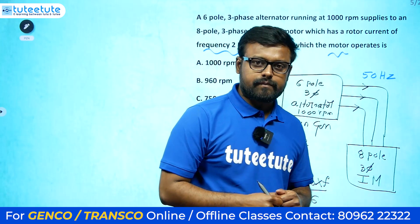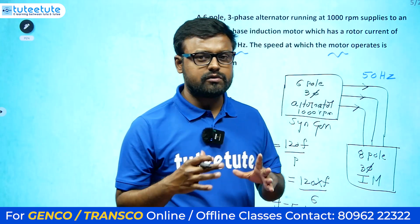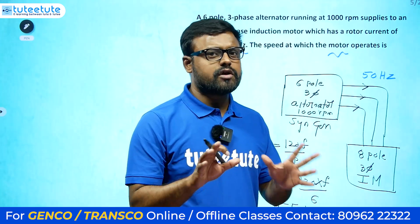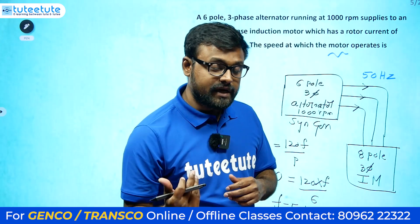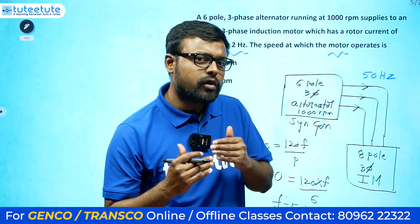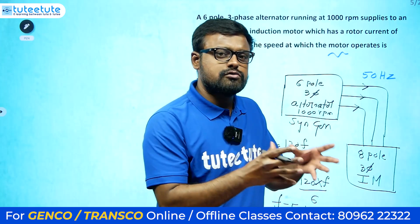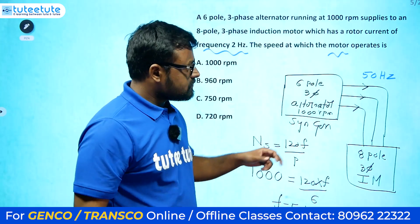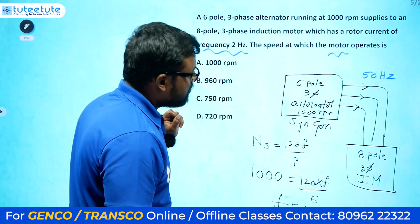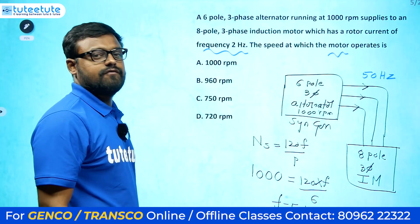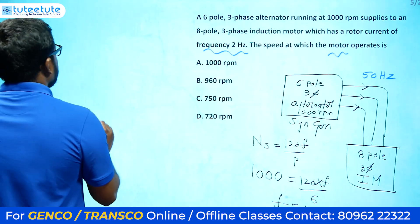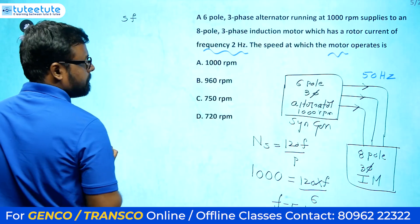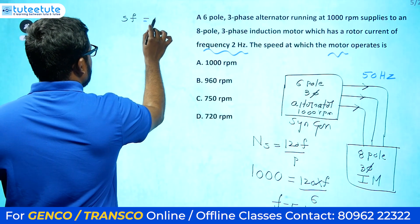The induction motor is a singly excited machine — we give supply only to the stator winding. The rotor rotates at a speed very close to but less than the synchronous speed. Now, the rotor current frequency is given as 2 Hz. We know that the rotor current frequency equals slip × stator frequency, so slip × F = 2 Hz.